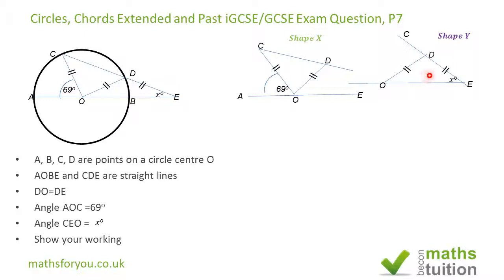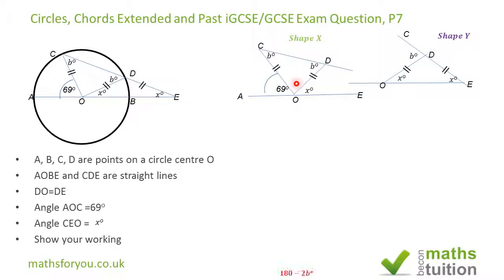Because Shape Y is an isosceles triangle, if one base angle is x, the other must also be x. On the main diagram that angle is also x. For Shape X, it is also an isosceles triangle, so if one base angle is b, the other is also b, giving the apex angle as 180 minus 2b.